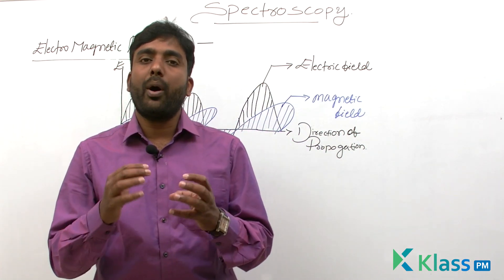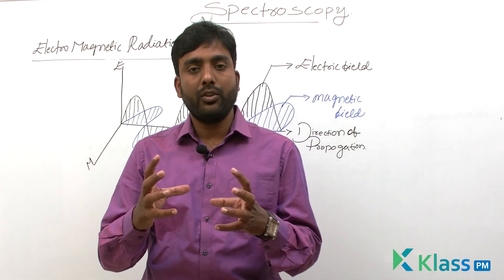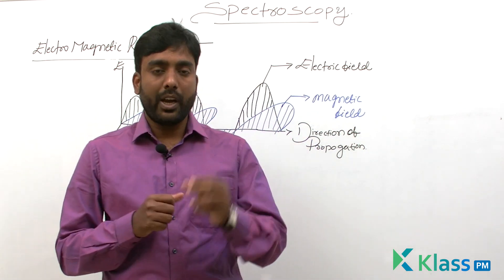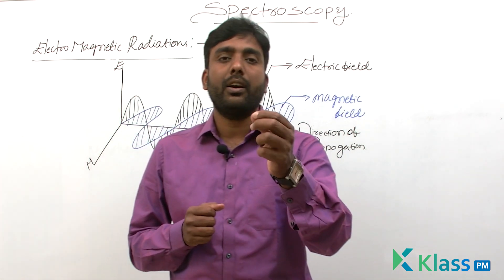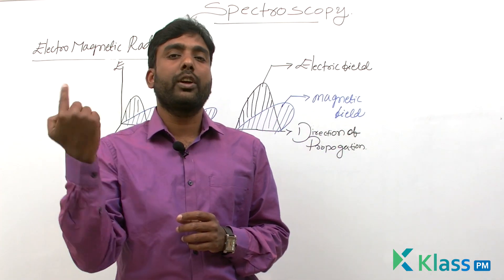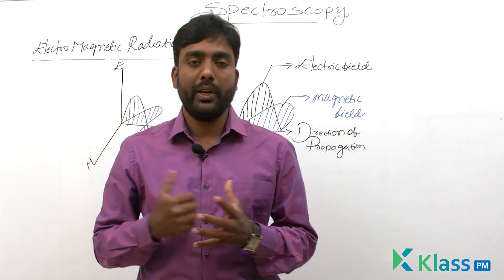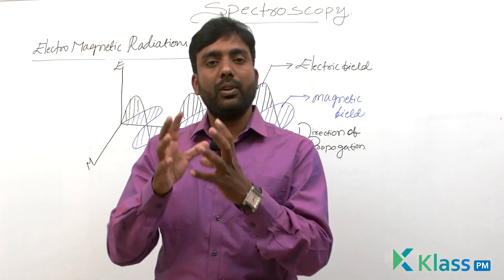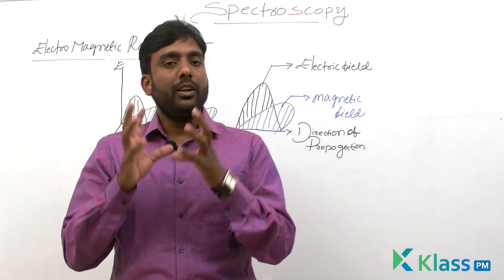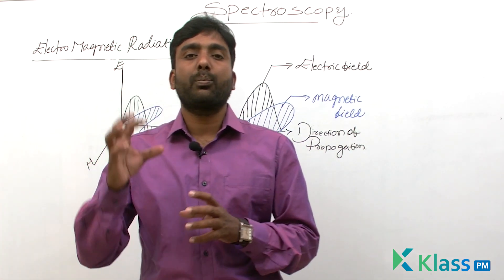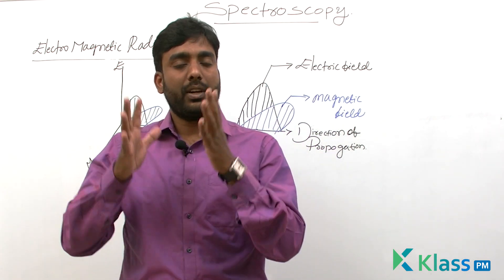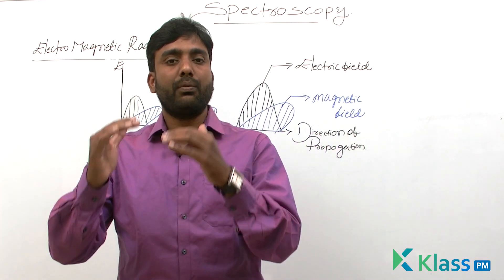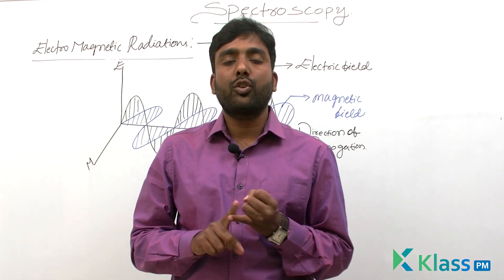Whenever a charged particle is accelerated, it produces oscillating electric and magnetic fields. That charged particle can be something small like an electron, or you can also consider electrons in an electric circuit. These oscillating electric and magnetic fields propagate and transmit in the form of waves, and these waves are called electromagnetic waves.